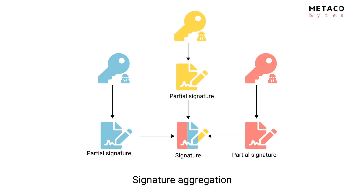The counterpart to key aggregation is signature aggregation. Bob, Carol, and Alice can each create partial signatures with their private keys and then aggregate those signatures into a single signature. This aggregated signature is valid under the internal key.